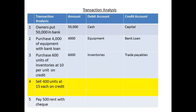Now we are able to sell some of the units — we sell 400 of the units at £15 each on credit. The amount by which our inventories have been reduced will be 400 times 10, which is £4,000. This will reduce the asset of inventories. We are going to debit the account for cost of sales — this increases the account for cost of sales — and we shall credit the asset account of inventories to reduce the balance.